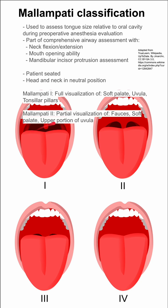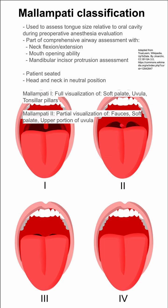Mallampati 2 shows partial visualization of the fauces — you can see that in the background here — the soft palate, and the upper portion of the uvula.